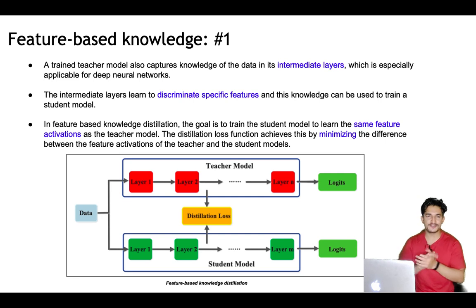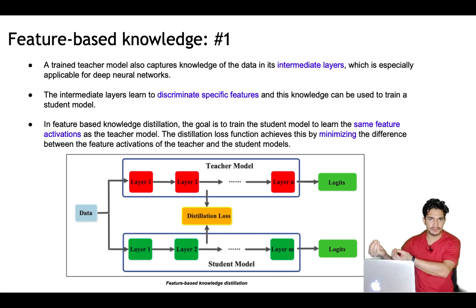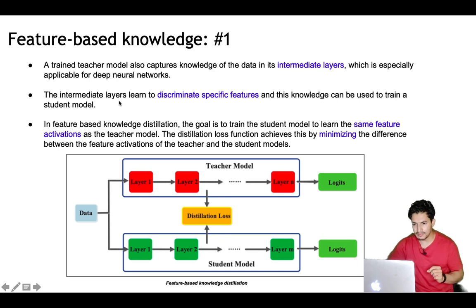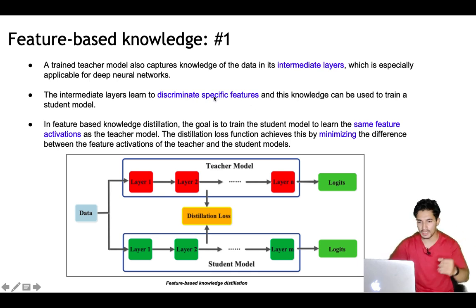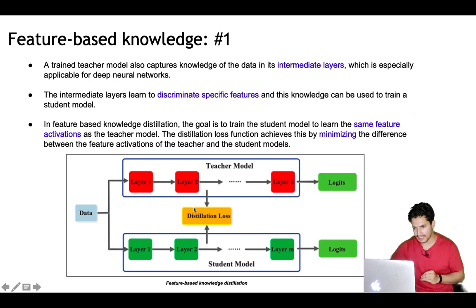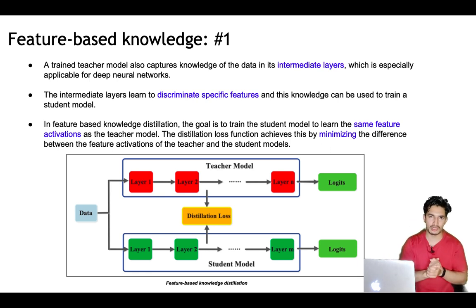In response-based knowledge, we want to mimic the final output predicted probability of the teacher model in the student model. In feature-based knowledge, a trained teacher model captures knowledge of data in the intermediate layers, not just the output layer. The intermediate layers learn to discriminate specific features, and this knowledge can be used to train a student model. The goal is to train the student model to learn the same feature activations as the teacher model — the distillation loss is defined as minimizing the difference between the feature activations of the teacher and student models.